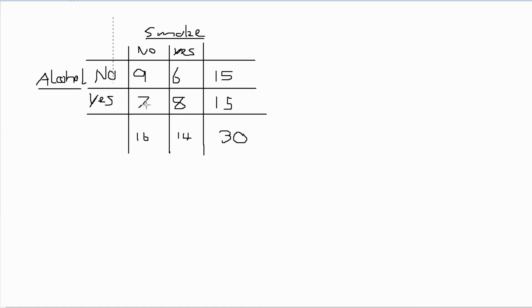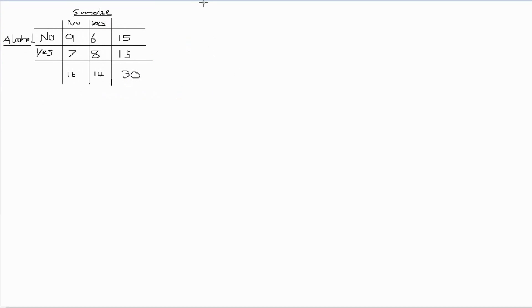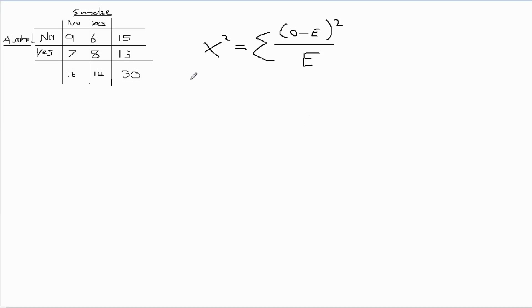Now that we have that sorted out, we can move on to the actual calculations. The formula for chi-square is: chi-square equals the sum of the observed frequencies minus the expected frequencies, squared, divided by the expected frequency. This means we first have to calculate the expected frequencies for all the different cells.